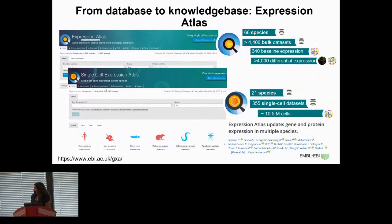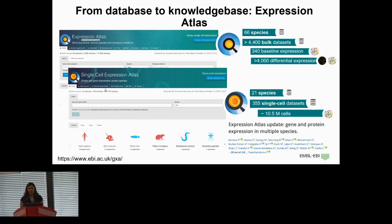The Expression Atlas is split into two resources. The main bulk Expression Atlas contains data from 65 different species and currently has over 4,000 bulk datasets. About 90 of them come from proteomics techniques such as mass spec; the rest are RNA-seq with some microarrays. Around 340 describe baseline expression — the constitutive expression of genes in tissues at healthy conditions. We also have many differential expression experiments comparing, for example, healthy and disease.